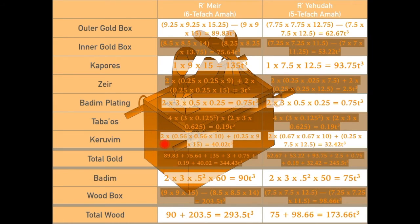Attached to the kapores are the kruvim. As mentioned earlier, life-sized people are one by one by three amos. The kruvim stood ten tefachim tall. Thus proportionally, their length and width are 0.56 tefachim each, according to Rabbi Meir, and 0.67 tefachim, according to Rabbi Yehuda. Since their wings covered the Aron, together they had an area of roughly 9 by 15 tefachim, according to Rabbi Meir, and 7.5 by 12.5 tefachim, according to Rabbi Yehuda.